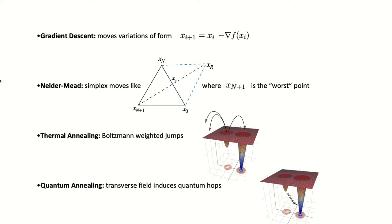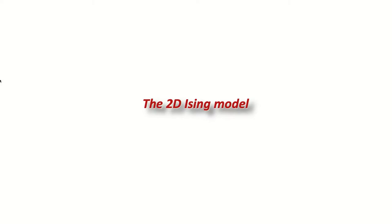Thermal annealing is the classical equivalent to quantum annealing: you are in some minimum and you allow jumps between minima with a Boltzmann weighting at some temperature, then reduce the temperature so you end up in the global minimum. Quantum annealing instead induces quantum tunneling in the system. A key challenge is encoding the landscape — the annealer has an Ising model, essentially a quadratic model, yet we want to encode something more complex with many minima.